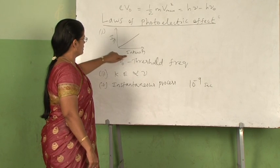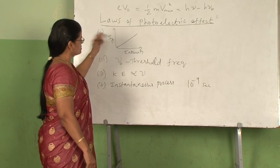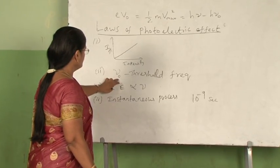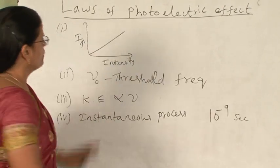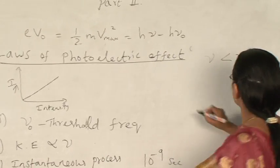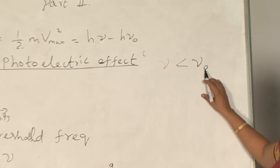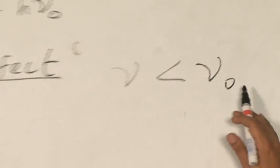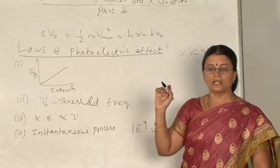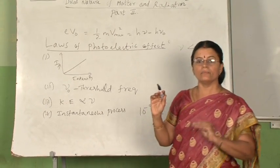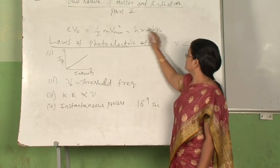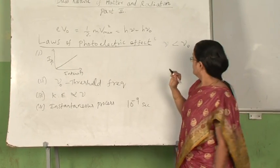This explains the first law — photoelectric current is directly proportional to intensity of incident radiation. For the second law, going back to Einstein's photoelectric equation: suppose the frequency ν of the incident photon is less than ν₀, the threshold frequency. Then according to the equation, the kinetic energy will become negative, which is not possible, because kinetic energy of any system can never be negative. So this condition cannot take place at all — ν can never be less than ν₀.